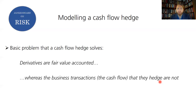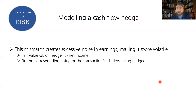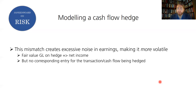What it tries to solve is this problem: derivatives use fair value accounting as per the accounting standards, whereas the business transactions — the cash flows that they hedge — are not. So there's a mismatch creating artificial excess volatility in net income, which is not appreciated by corporates. Any change in the fair value of a derivative has to be reported in net income, but there is no corresponding entry for the anticipated transactional cash flow that we're trying to protect with the hedge.